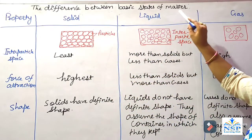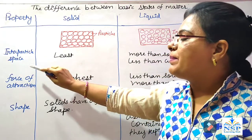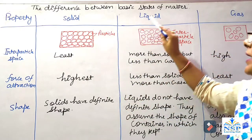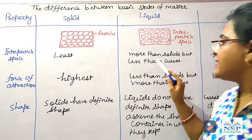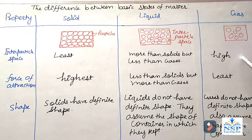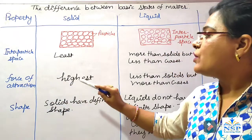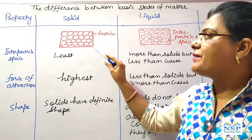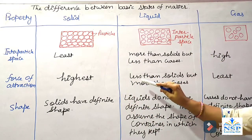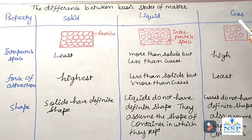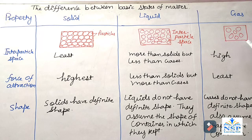The difference between basic states of matter: Number one, interparticle space — least in solids, more than solids but less than gases in liquids, and very high in gases. Force of attraction — highest in solids because particles are very close, less than solids but more than gases in liquids, and least in gases because particles are very far away.